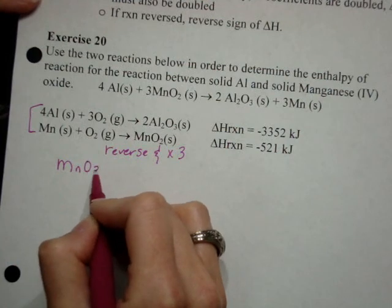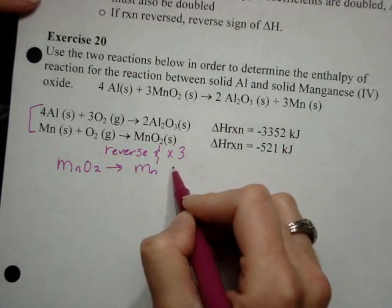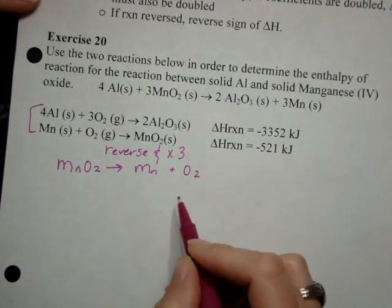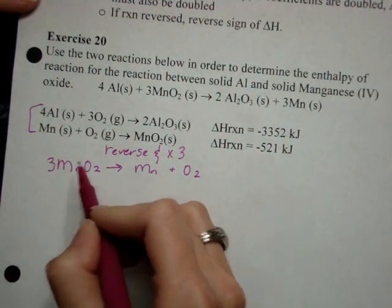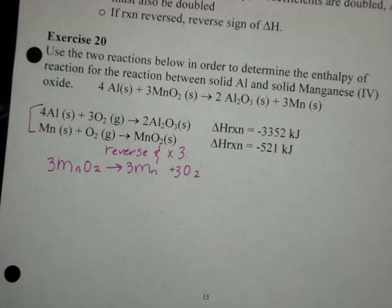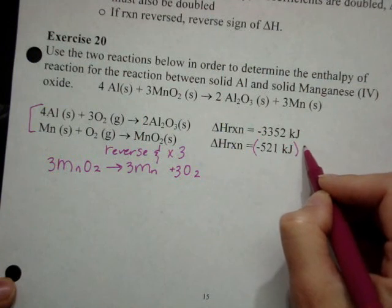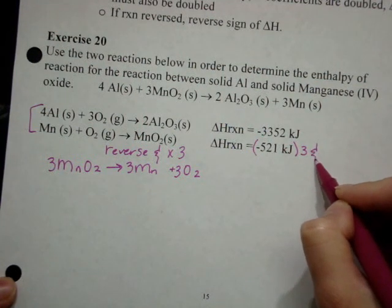I'm going to go ahead and do that as I rewrite the equation. First of all, I'll flip the equation: MnO2 yields Mn plus O2, and then multiply the value by three. So three moles for each because they were all one mole before. And then I also need to multiply the value of this by three and change the sign.